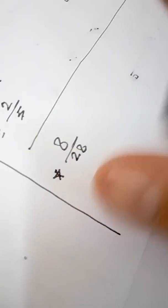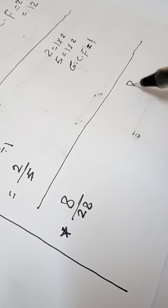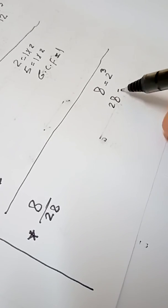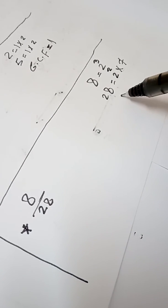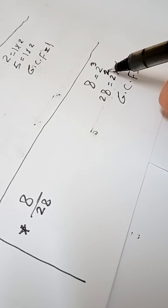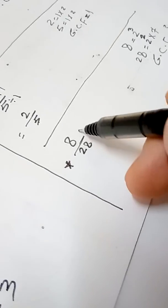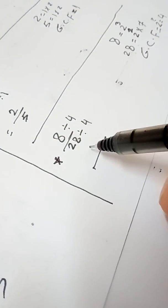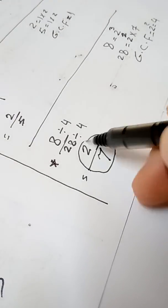The last question: we have 8 over 28. Take 8 — 8 equals 2 times 2 times 2, which is 2 exponent 3. And 28 equals 4 times 7, and 4 equals 2 times 2, so 28 equals 2 exponent 2 times 7. The GCF: the common factor is 2 in the lowest exponent, 2 exponent 2, which equals 4. Divide both by 4: 8 divided by 4 equals 2, and 28 divided by 4 equals 7. So the simplest form is 2 over 7.